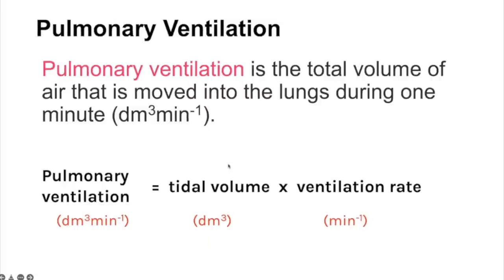The pulmonary ventilation calculation gives the total volume of air moved into the lungs in one minute, measured in dm³ per minute. To calculate it: tidal volume × ventilation rate. Tidal volume is the total volume of air per breath, and ventilation rate is how many times you breathe per minute.